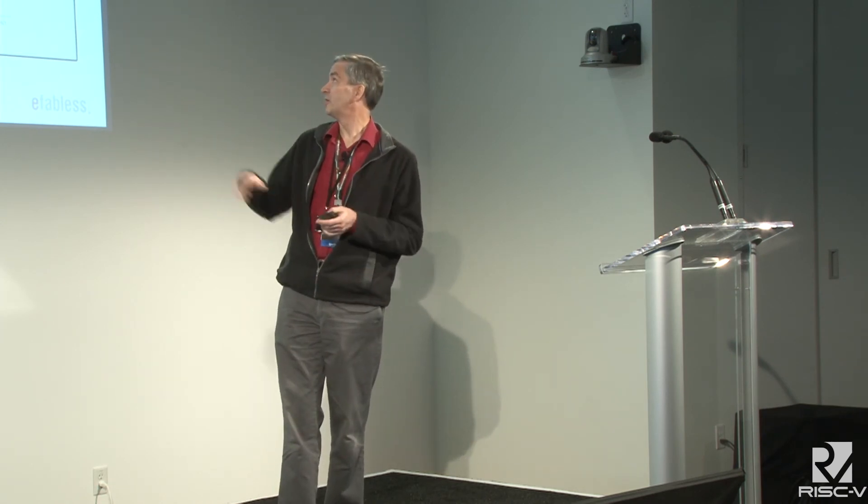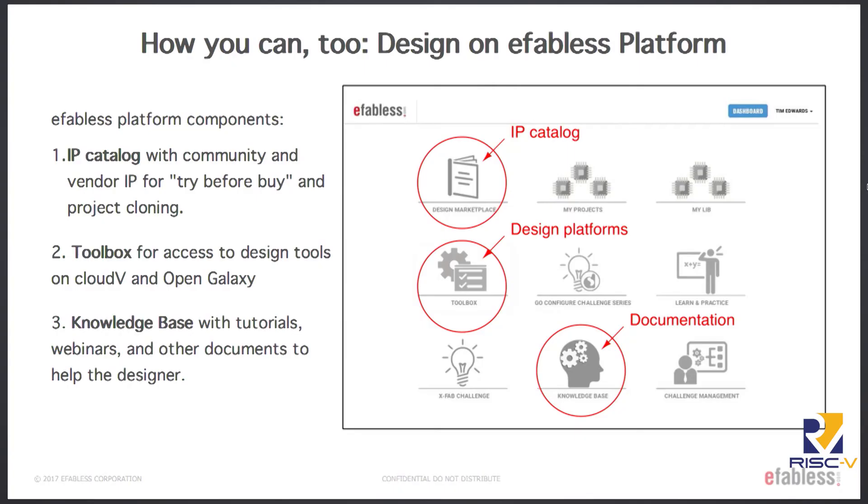On the eFabless platform, we have our marketplace, which contains a few major components. One is the IP catalog, where we have a catalog of all various kinds of digital Verilog or hardened IP, and all the analog IP as well. You can pick and choose what you want in your SoC and pull that into your design platform. We have two design platforms: one for Verilog synthesis and the other for chip assembly, called Chiplicity. And for that moderate learning curve, we have a whole section of documentation to help you through the tools.